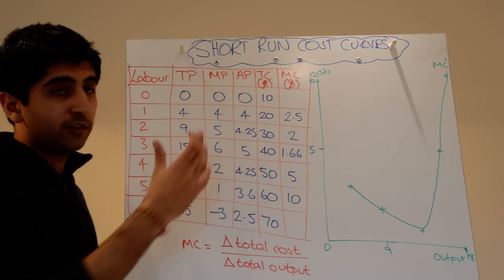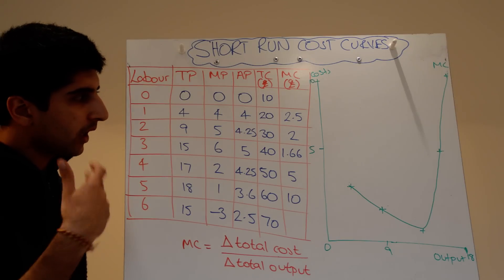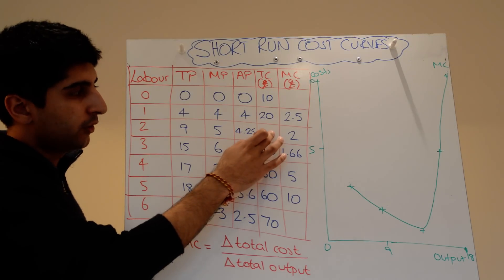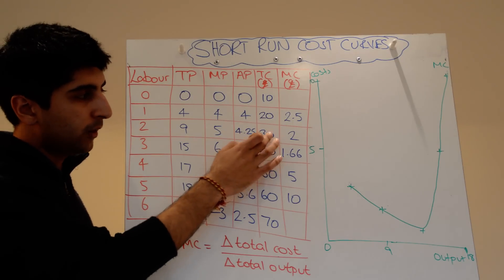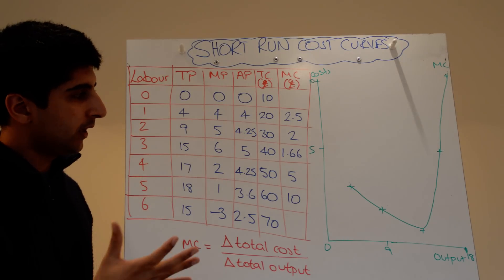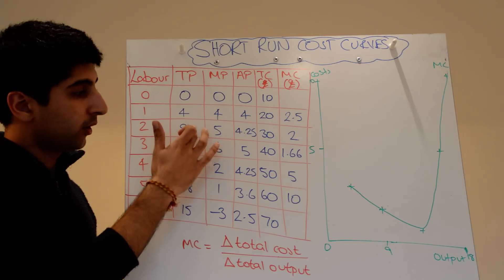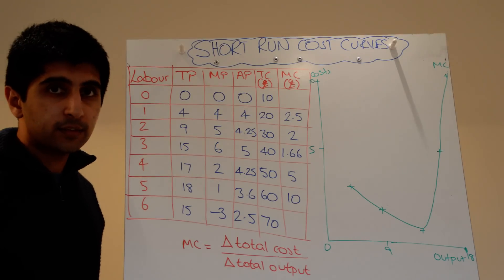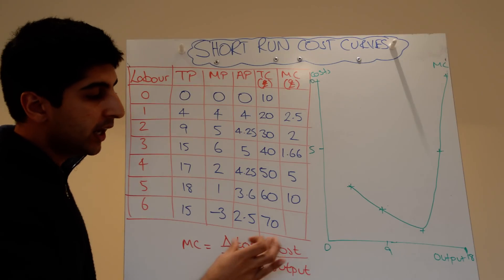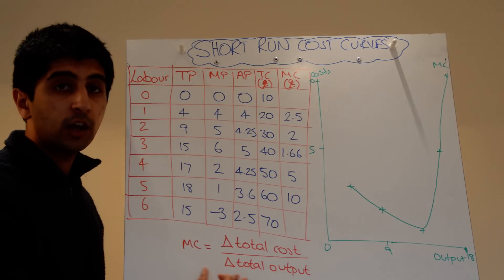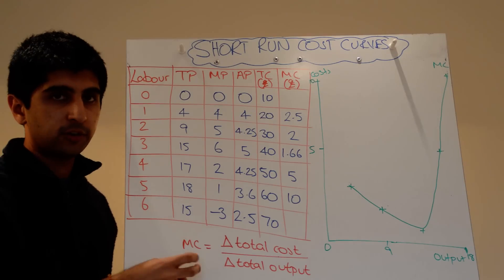So the cost of making those extra five units is £2. As we go further, our change in total cost as we hire our third worker is £10 — from 30 to 40, the cost is £10. And the change in total product is 6, so 10 divided by 6 is 1.66, etc. The key thing is the change in total cost over the change in total output — that's how we measure marginal cost.